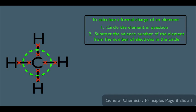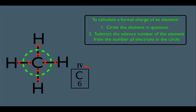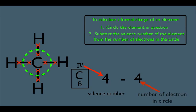This enables you to do the second step: subtract the valence number of the element from the number of electrons in the circle. Carbon is in column four of the periodic table, which means he has four valence electrons. Within that circle, we count one, two, three, four electrons. Four minus four equals zero, so the formal charge of carbon is zero.